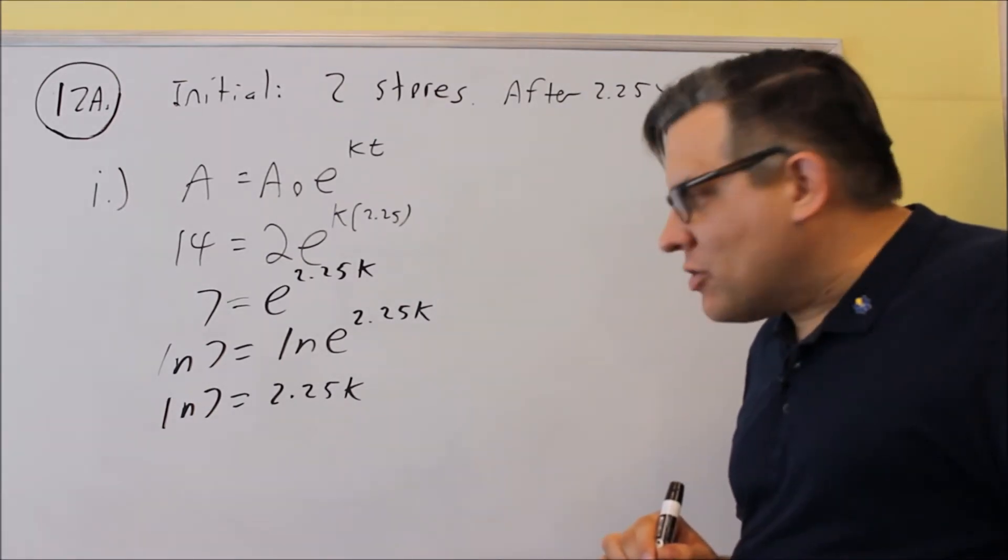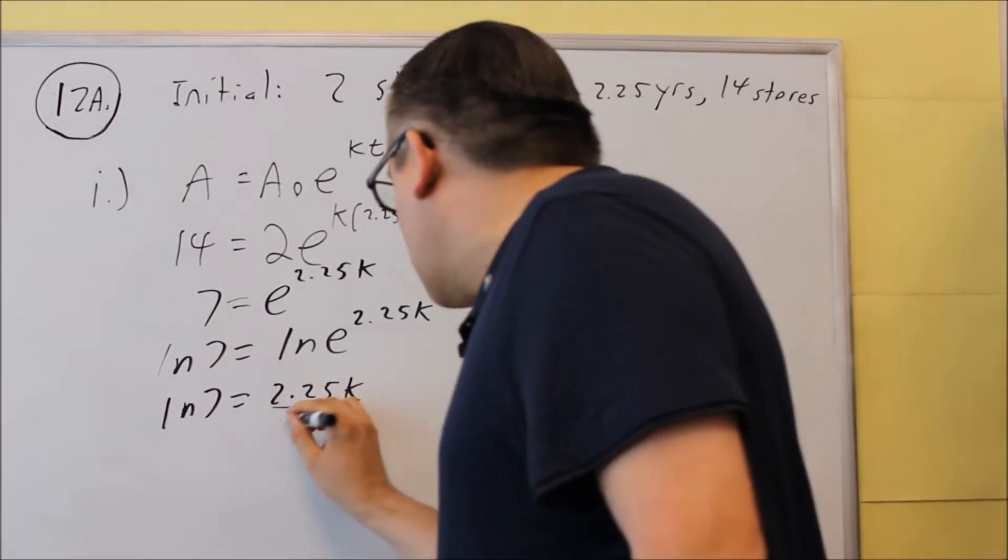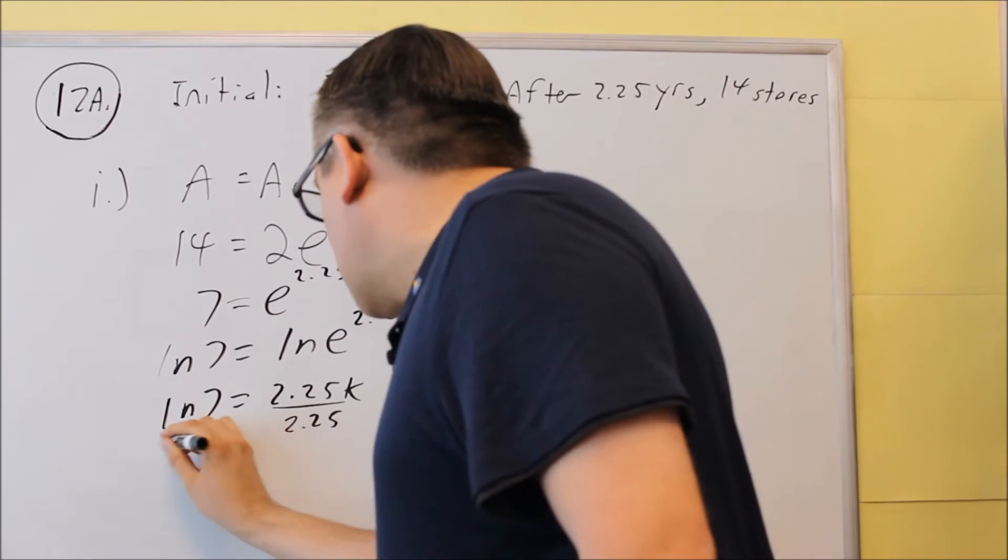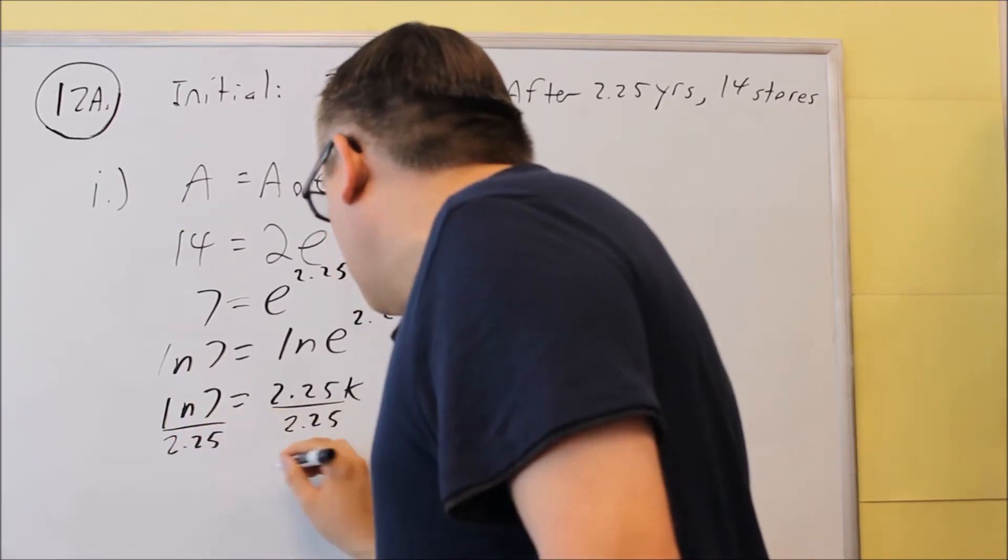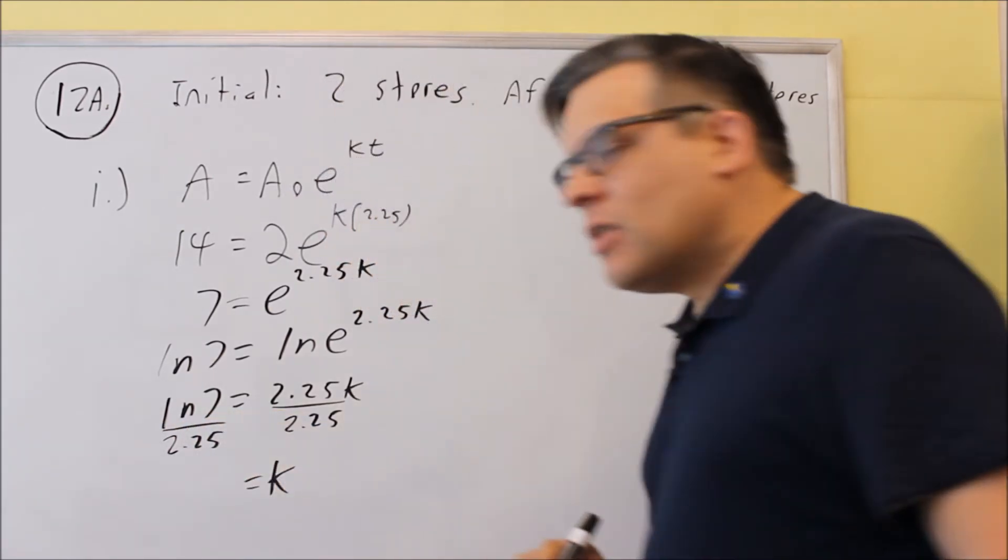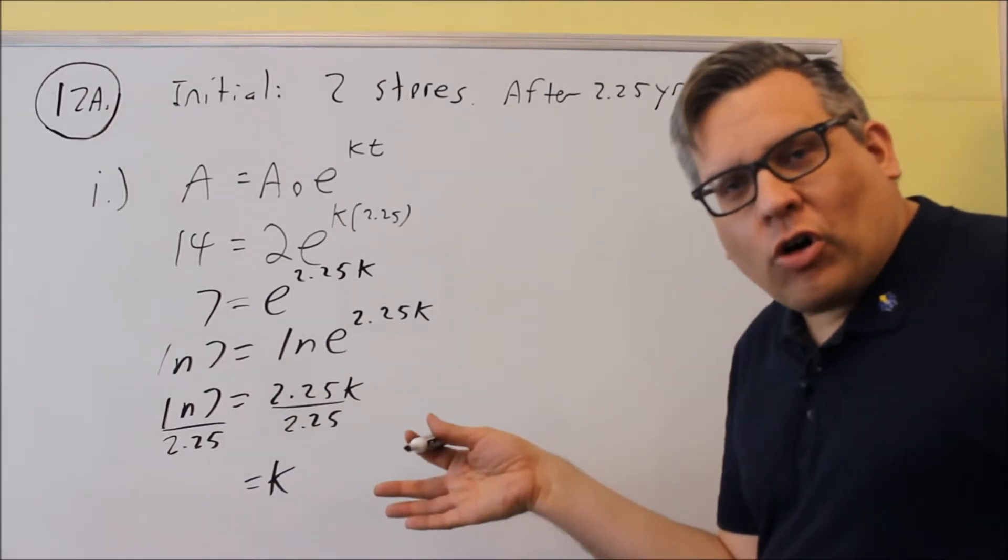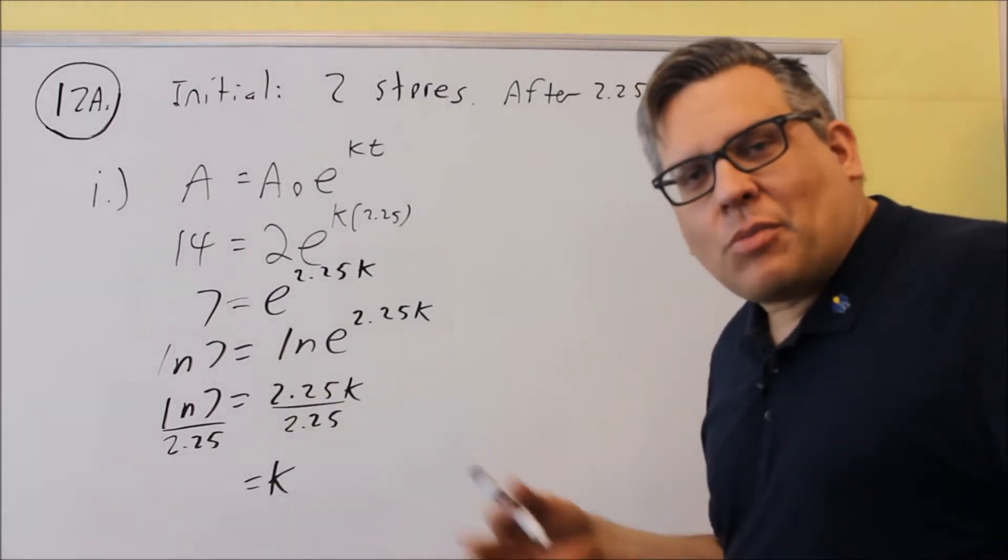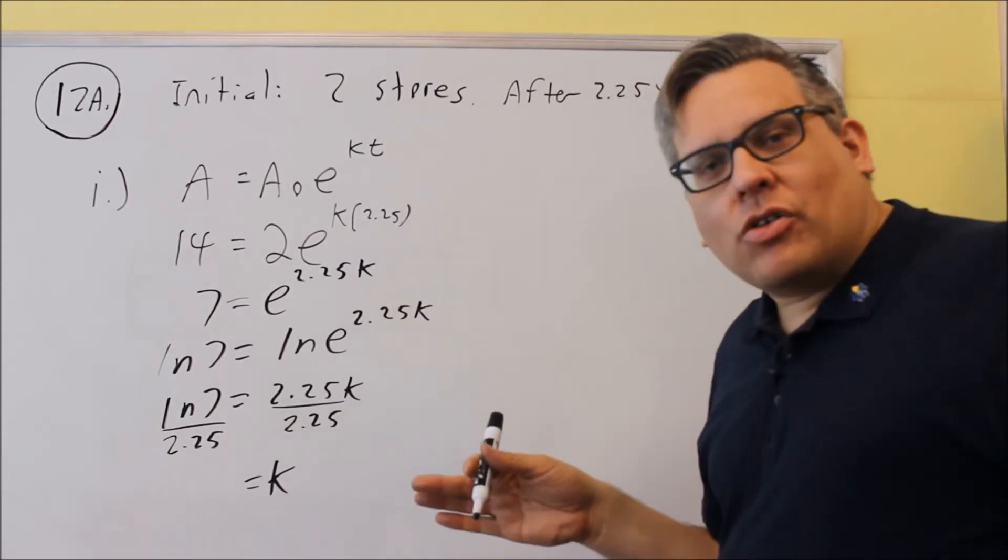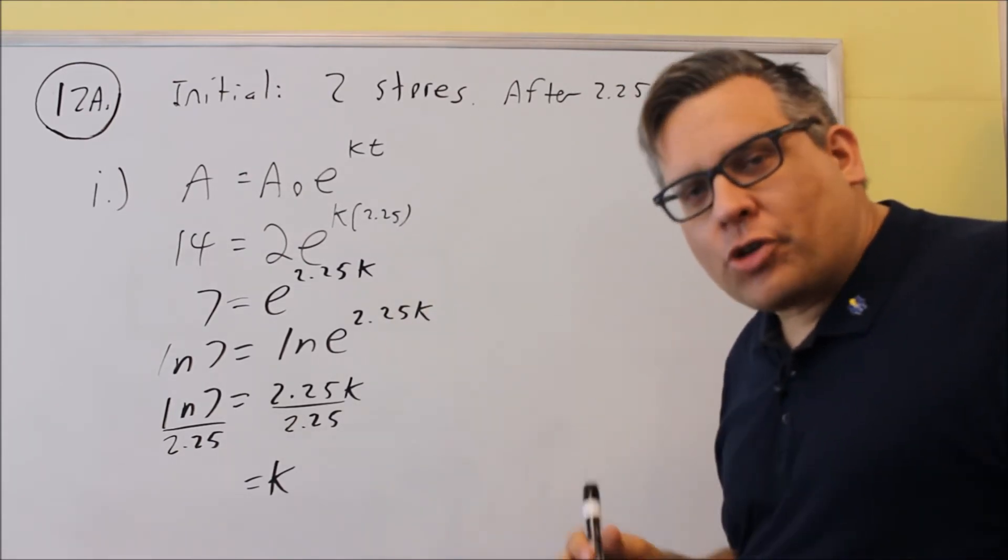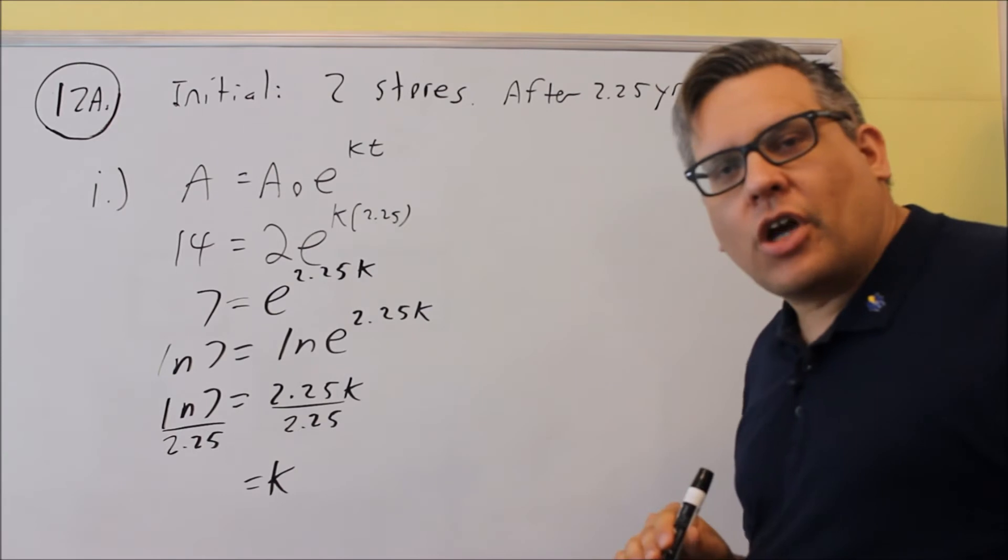And then we're going to divide both sides by 2.25. So when we do this, we're going to put this into the calculator. Natural log of 7 over 2.25. As I mentioned before in this playlist, any time you do a k value, it's okay to round it to four decimal places. That's what we're going to do again for this one.